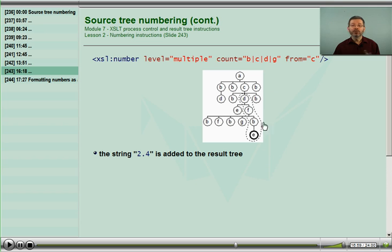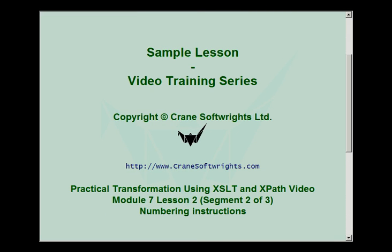Is F being counted? No. Is B being counted? Yes. 1, 2, 3, 4 things are being counted here, so 4 is to be added to the result tree. I see that there is no format token. The default token in a level equals multiple is a dot. So the processor adds a dot and then adds the 4. E is not being counted. We are finished, and so only 2.4 gets added to the result.